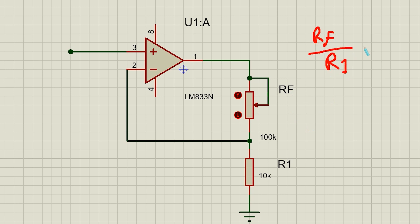I used a 100 kilo potentiometer as an upper resistor and a 10 kilo resistor as the lower one. So the gain of the circuit can vary between 1 and 11.